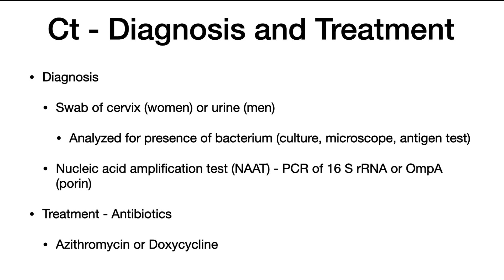Diagnosis and treatment: diagnosis can be difficult. In males it isn't too difficult because they will exude pus from their urethra and the organism is found in the urine. Women may not notice as much because the discharge isn't that distinctive. A swab of the cervix and culturing will reveal the bacterium. Testing methods include culture, microscopic examination, an antigen test, or a nucleic acid amplification test (NAT), which is a PCR of the 16S ribosomal RNA or OMP-A, a porin on the organism.